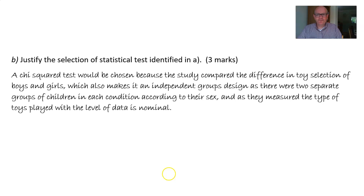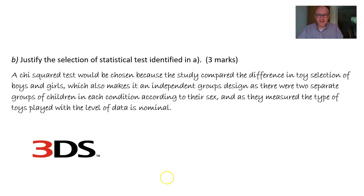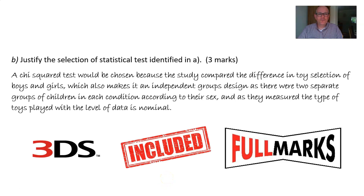Here's a sample answer for justifying the statistical test selection for three marks. 'A chi-squared test would be chosen because the study compared the difference in the toy selection of girls and boys, which also makes it an independent groups design as there were two separate groups of children in each condition according to their sex. And as they measured the type of toys played with, the level of data is nominal.' Can you spot the three D's? Difference, Design, and Data — all in there.